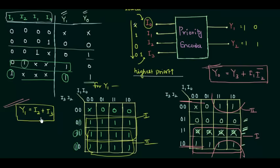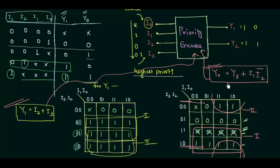You can easily implement these two functions using OR and AND gates, and whatever circuit you get will go inside this priority encoder block. That's all for this presentation — a very simple yet very important topic. There is a great chance of this question being asked in your exam, so enjoy it and see you in the next presentation.